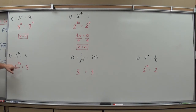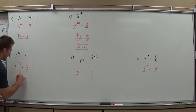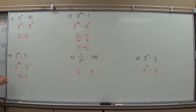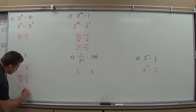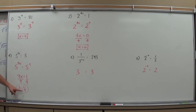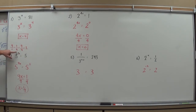Next: 5 to the 9x equals 5. I don't have an explicit exponent to compare to, but any number equals itself to the first power. So the base is the same and I set the exponents equal: 9x equals 1, so x equals 1/9. Checking: 9 × (1/9) = 9/9 = 1, so I have 5 to the first power, which is 5. Correct.